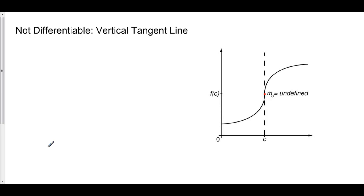Why doesn't the derivative exist at a vertical tangent line? Because the derivative is the slope of the tangent line, and the slope of a vertical tangent line requires dividing by zero — your run is zero — so the slope is undefined. Because the slope of a vertical line is undefined, and because the derivative is slope, it follows that a vertical tangent line is not differentiable.